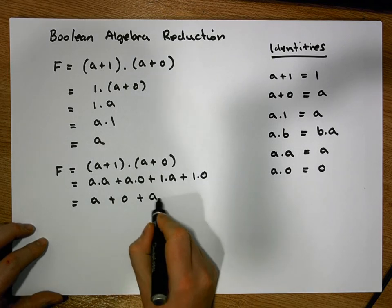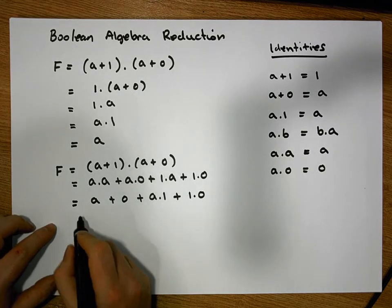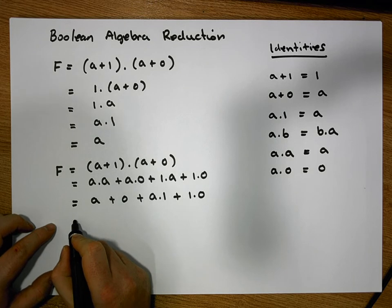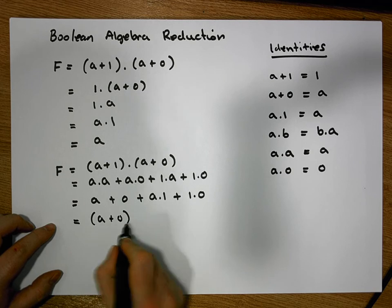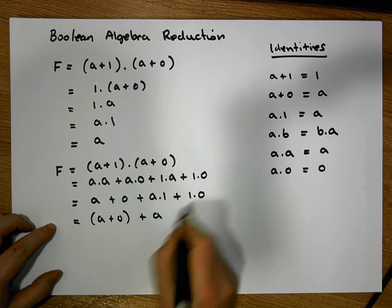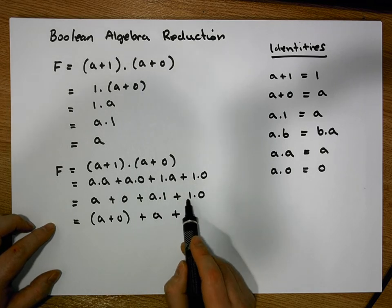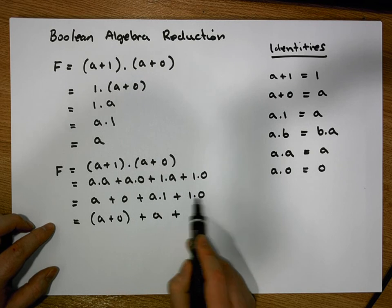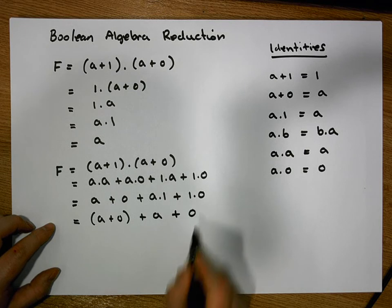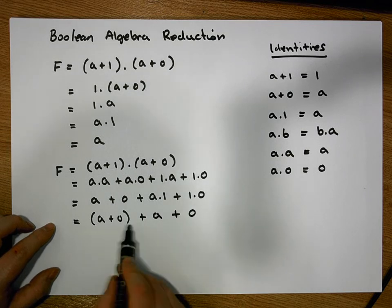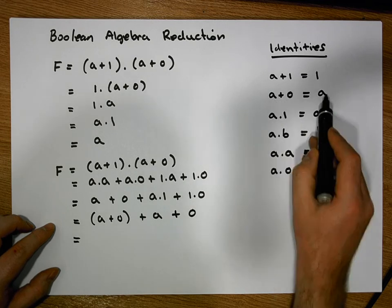1 AND'd with a is the same as a AND'd with 1, and this term 1 AND'd with 0 remains. We know an AND only gives us a 1 when both inputs are simultaneously 1, so a high voltage AND'd with a low voltage always gives a low voltage. From our identities, a OR'd with 0 is equal to a. So this becomes a.